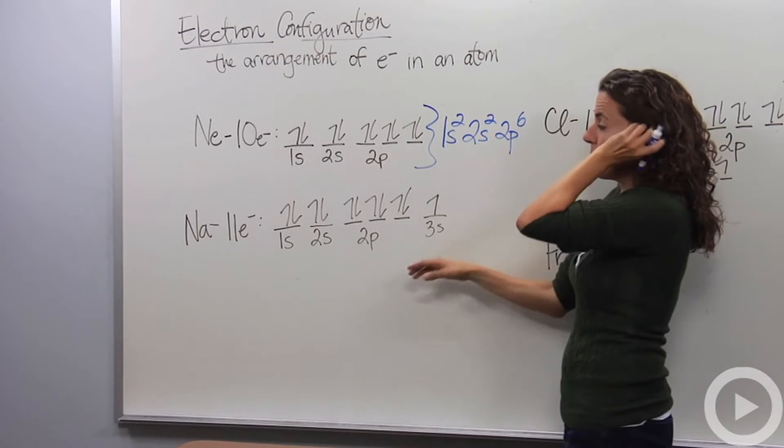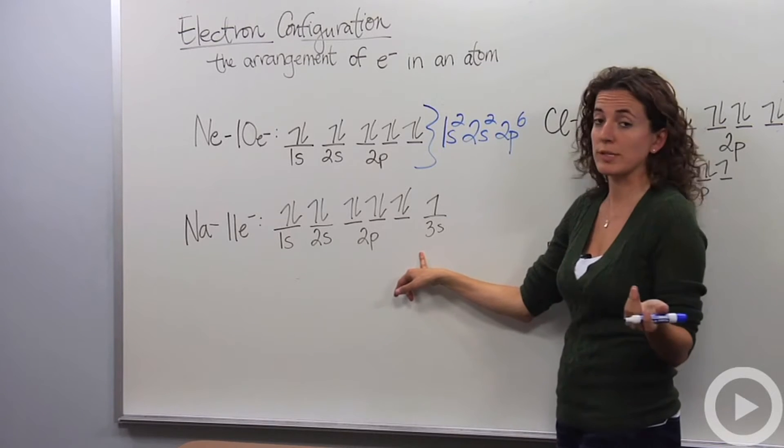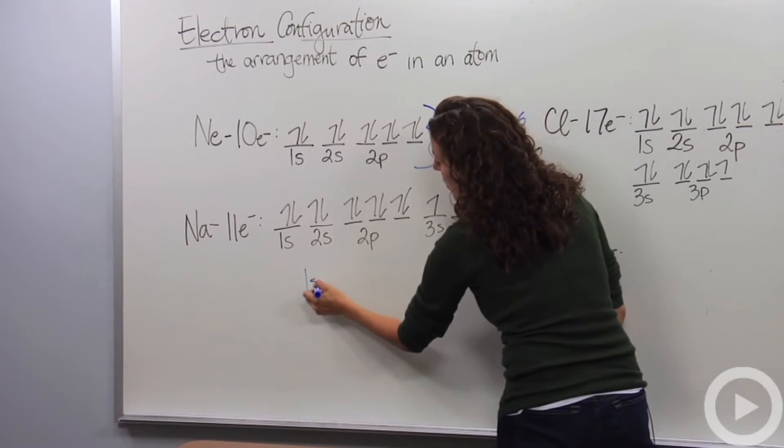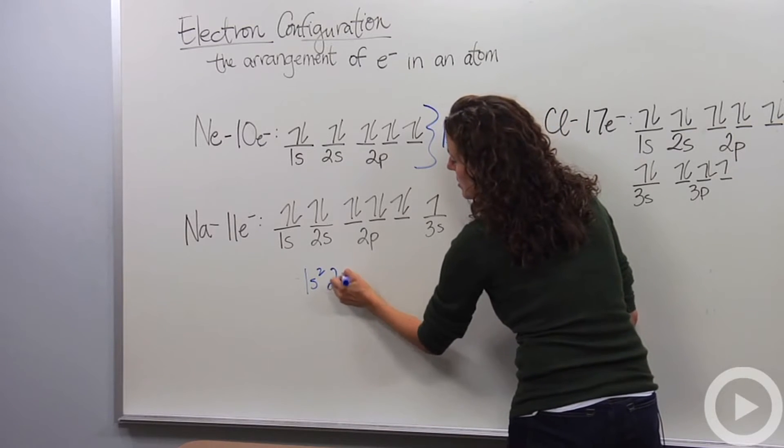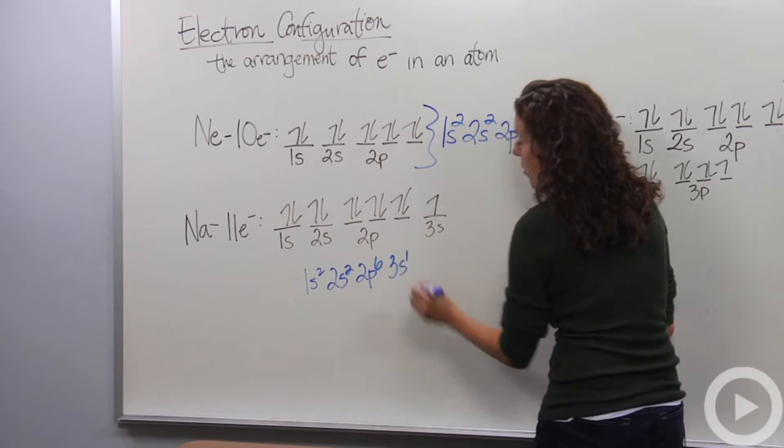Alright, so let's do something a little bit more. Let's do sodium. Sodium has 11 electrons in its neutral state. So we're going to say this has 1s2, 2s2, 2p6, 3s1.